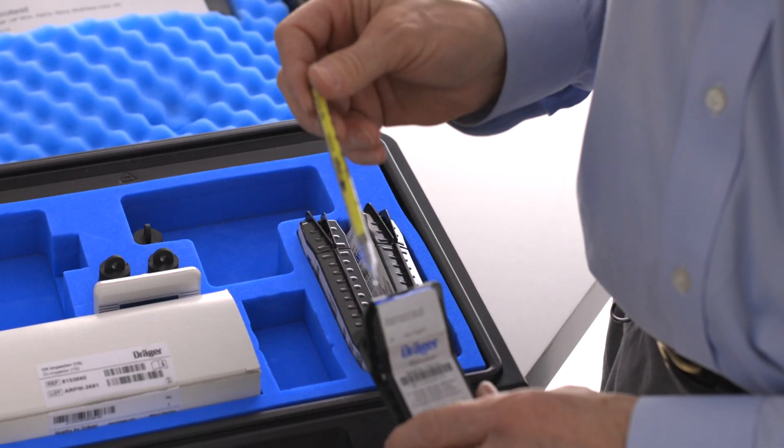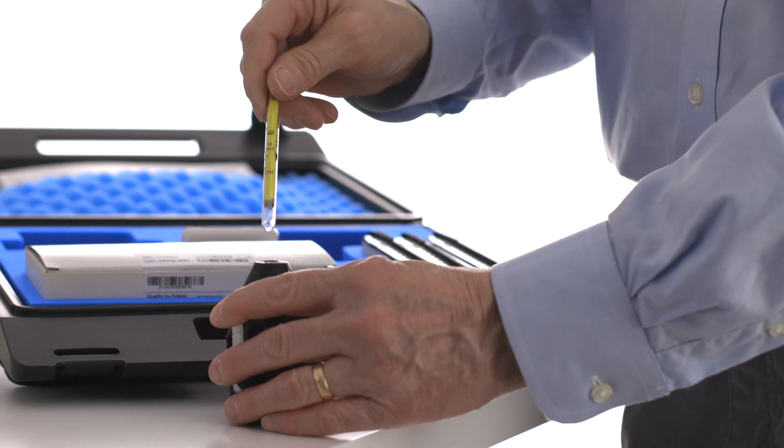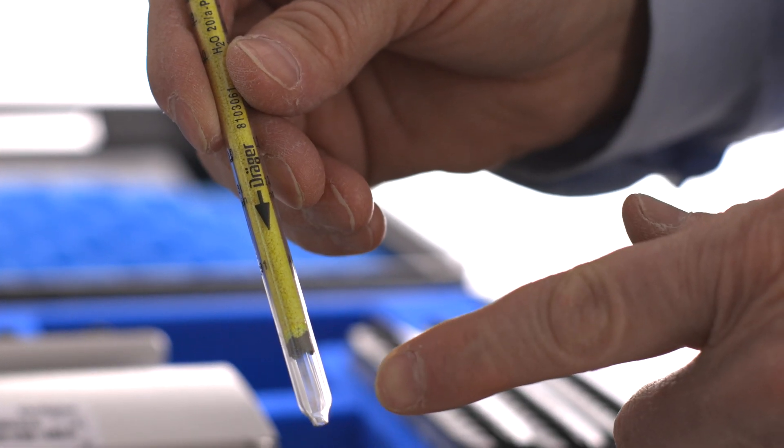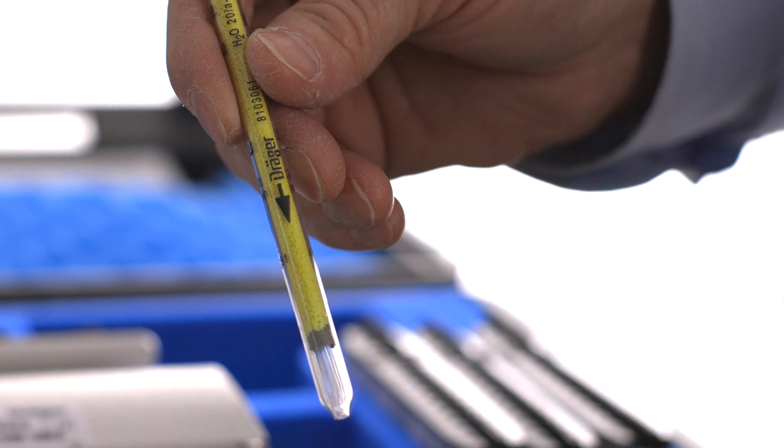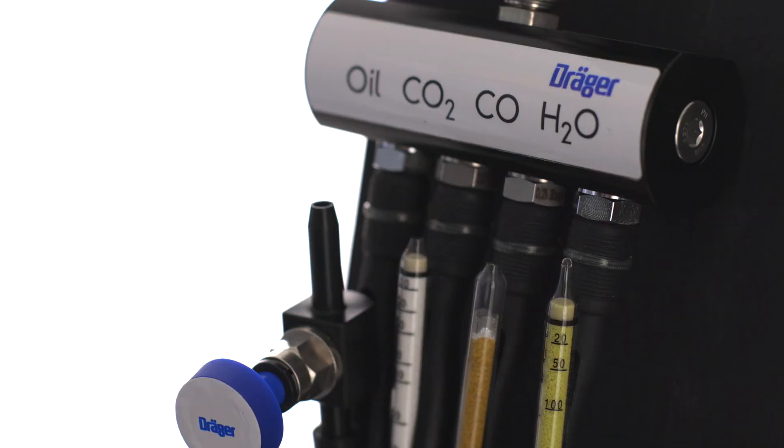Finally, take one of the water vapor tubes, but in this case we will only remove the tip from the outlet end of the tube, which is the end the arrow points towards. This tube is extremely sensitive to ambient humidity, so we won't remove the other tip until we are ready to start the test. Insert the tube into the holder, leaving the top part disconnected.